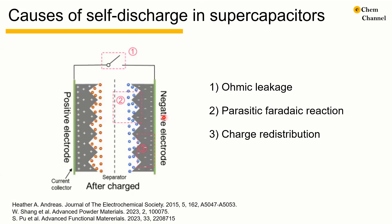Self-discharge occurs because a high potential is held on the two electrodes in the charged state, and this high energy state will naturally relax to the low energy, uncharged state. There are three types of mechanisms that lead to self-discharge: ohmic leakage, parasitic Faradaic reactions, and charge redistribution.